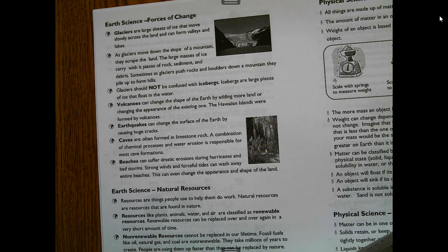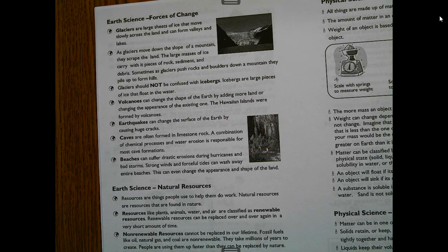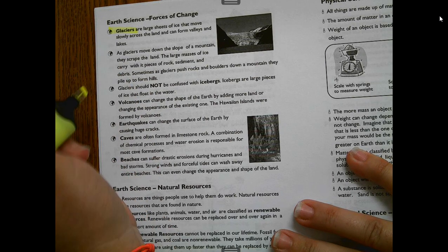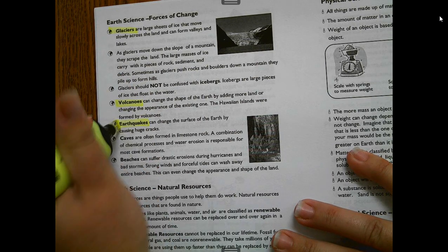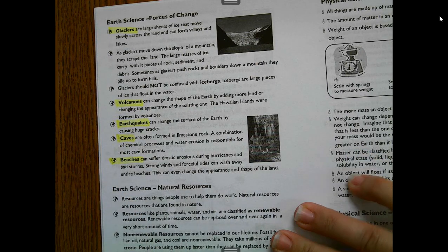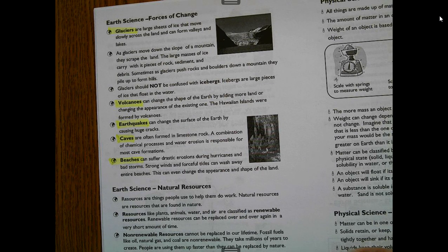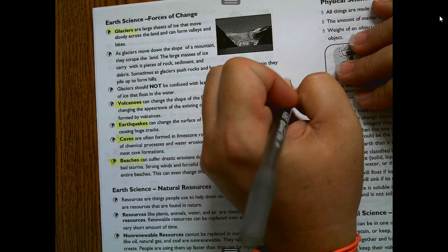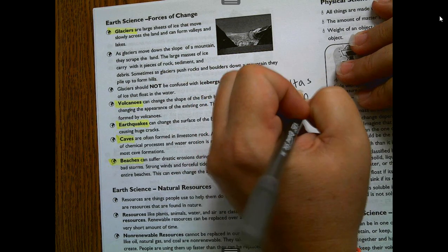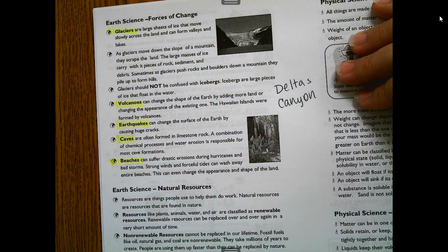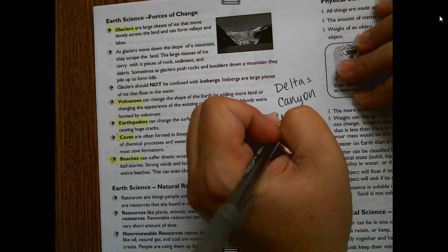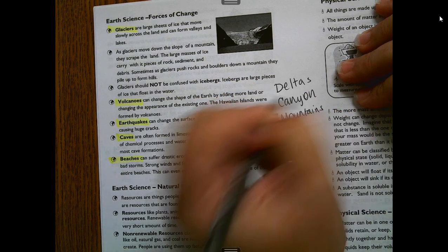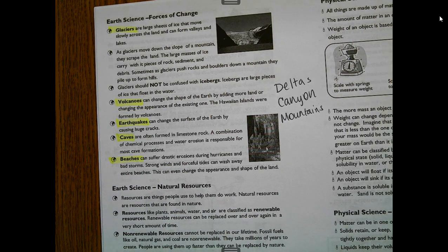Forces of change: vocabulary includes glaciers, volcanoes, earthquakes, caves, beaches, and other landforms. Students need to know how each landform was formed using terms like weathering, erosion, and deposition. Additional landforms that may pop up: deltas, canyons, and mountains. Know how those are formed and how they change.